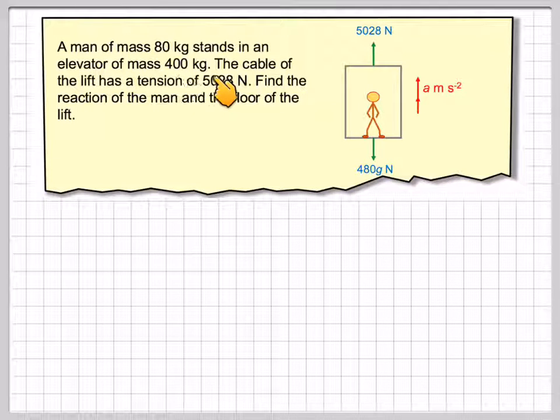A man of mass 80 kilograms stands in an elevator of mass 400 kilograms. The cable of the lift has a tension of 5028 newtons. Find the reaction of the man and the floor of the lift.